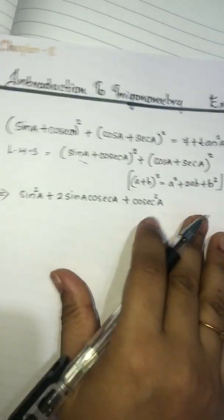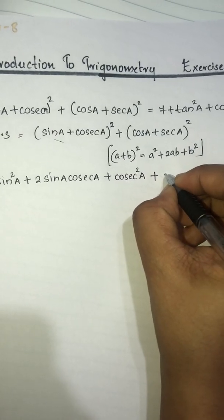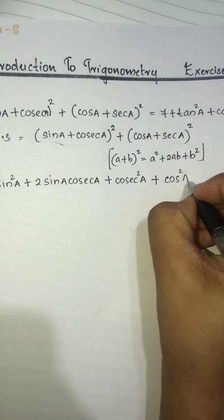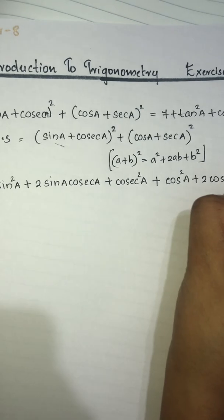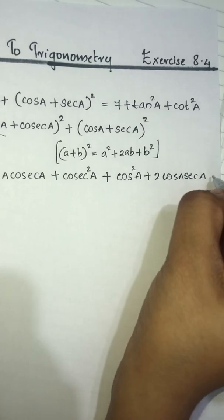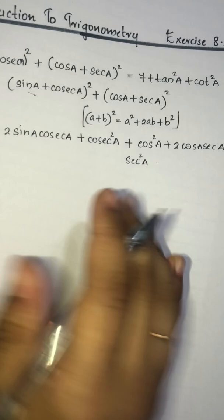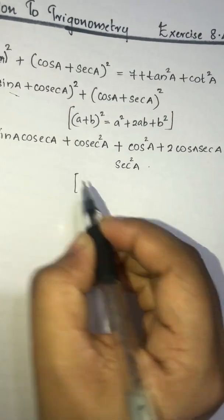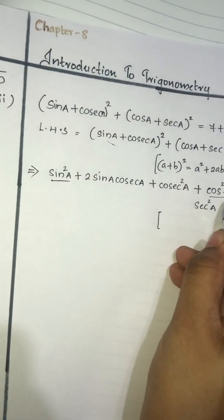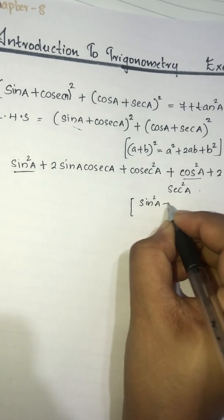So (sinA + cosecA)² expands to sin²A + 2·sinA·cosecA + cosec²A. And (cosA + secA)² expands to cos²A + 2·cosA·secA + sec²A.